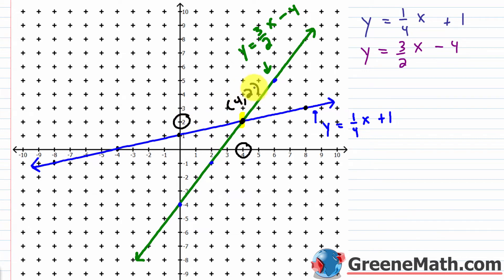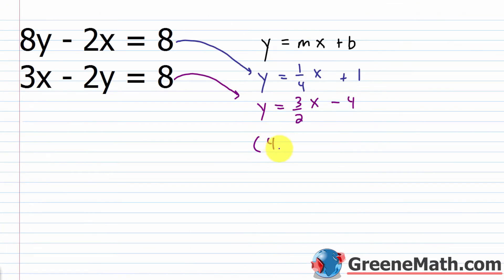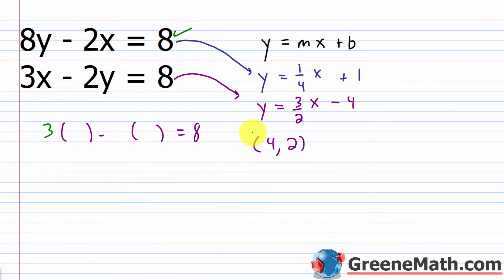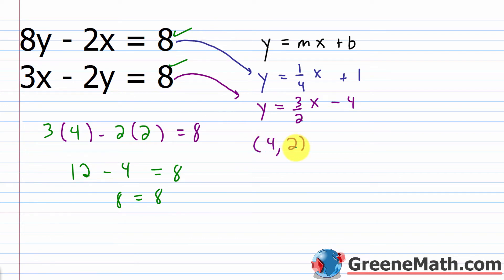The point of intersection is at x equals 4, y equals 2 — that is, the ordered pair (4, 2). It's significant because it lies on both lines, so it's a solution to both equations and to the system. We verify: for 8y - 2x = 8, plug in y = 2 and x = 4: 8 times 2 is 16 minus 2 times 4 is 8, and 16 minus 8 is 8. For 3x - 2y = 8: 3 times 4 is 12 minus 2 times 2 is 4, which equals 8. Both check out — (4, 2) is the solution.